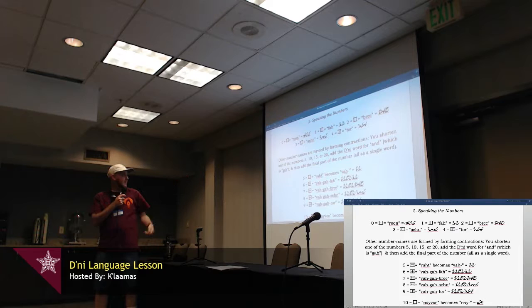And the other numbers, you abbreviate those numbers and then add the D'ni word for and, which is ga, and then the next number. So 5 becomes Va, you shorten it to Va, and then 6 is Va Ga Fa, instead of Va Ga Fa, 5 and 1, it's a shortened version. Va Ga Fa, Va Ga Bree, Va Ga Sen, Va Ga Tor.